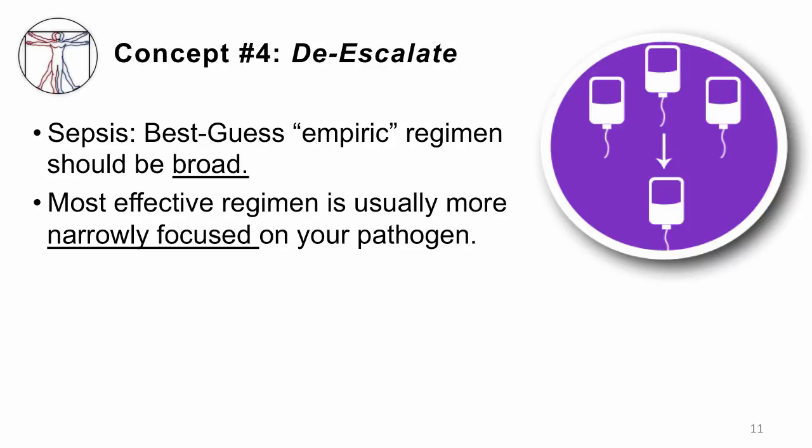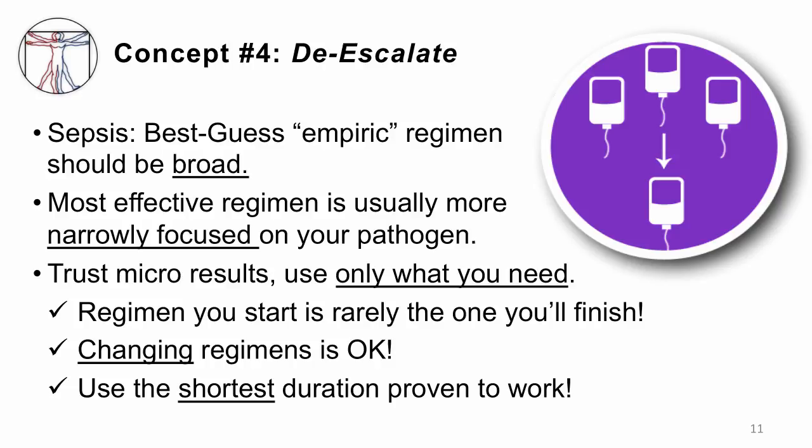De-escalation is key. Take the example of sepsis: we have a critical need to cover patients broadly. Every hour a patient with sepsis is not covered with appropriate antibiotics, their mortality goes up substantially. So for a septic, critically ill patient, you must cover them broadly — well before any microbiologic test comes back. Start broad, but understand that ultimately you're giving them more than they need, and be willing to focus antibiotics more narrowly once you've confirmed the pathogen. Use what you need, but only what you need. The regimen you start will very rarely be the regimen you finish. Changing your regimen based on microbiologic results is totally appropriate. You'll do less collateral damage to other classes of organisms, and the more focused the regimen, often the more impactful and effective it will be.